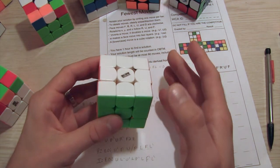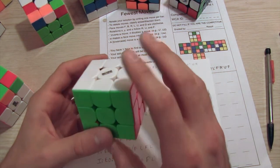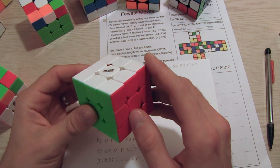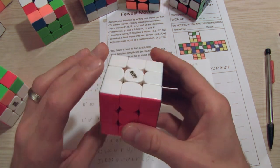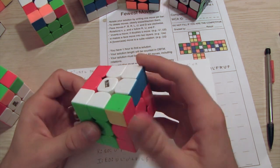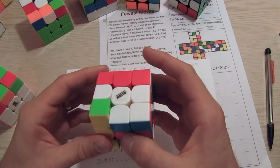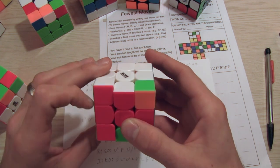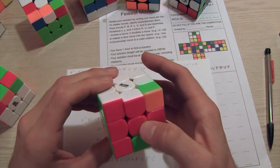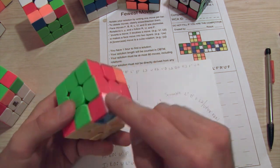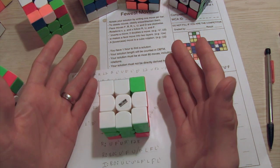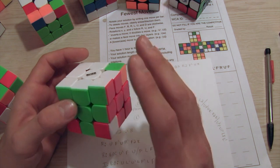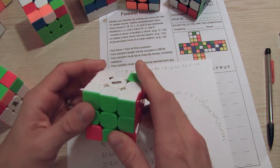Now commutators kind of confused me for a long time. I would see people talk about it, and they would say something like, well, a commutator you can use is f prime u f d prime, and then that moves these pieces. But I have no idea why or how. So I want to figure out if there's an intuitive way of doing it.